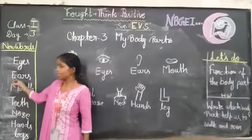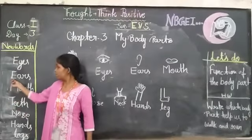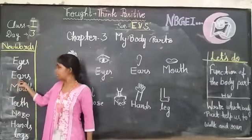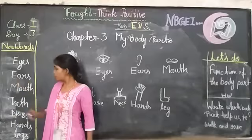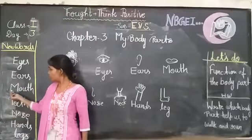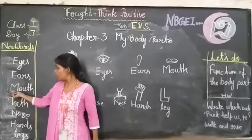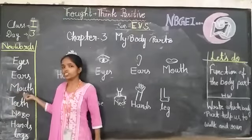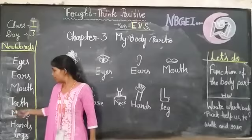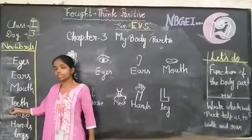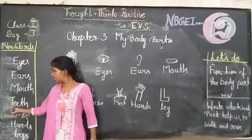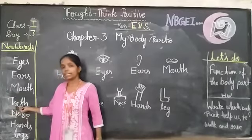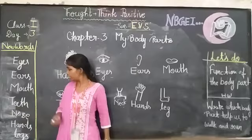Next word is ear. E, a, r. Ear. Your next word is mouth. M, o, u, t, h. Mouth. Next word is teeth. T, e, e, t, h. Teeth.